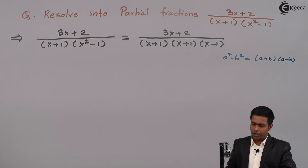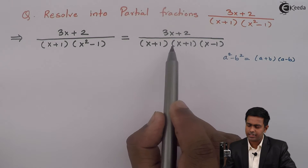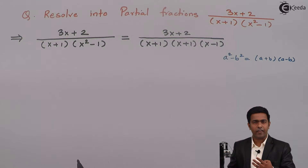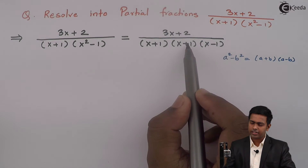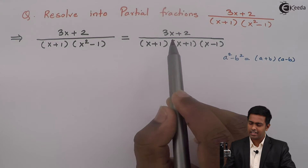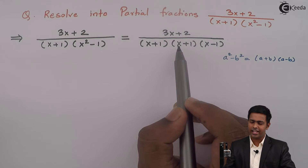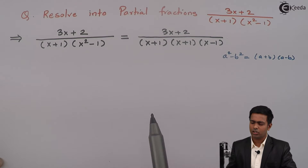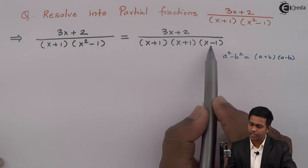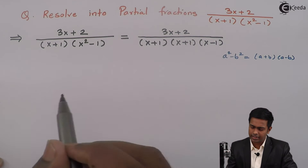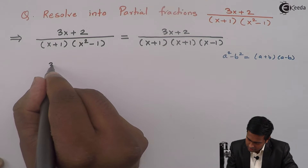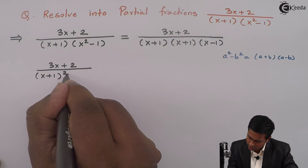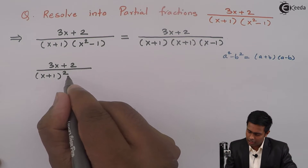Observing the first two brackets in the denominator, they are exactly the same. So in the denominator we have three factors, and out of those three, two factors are repeated. Hence we solve this by the method of repeated linear factors. We write it as (3x + 2) upon (x + 1)² into (x - 1).